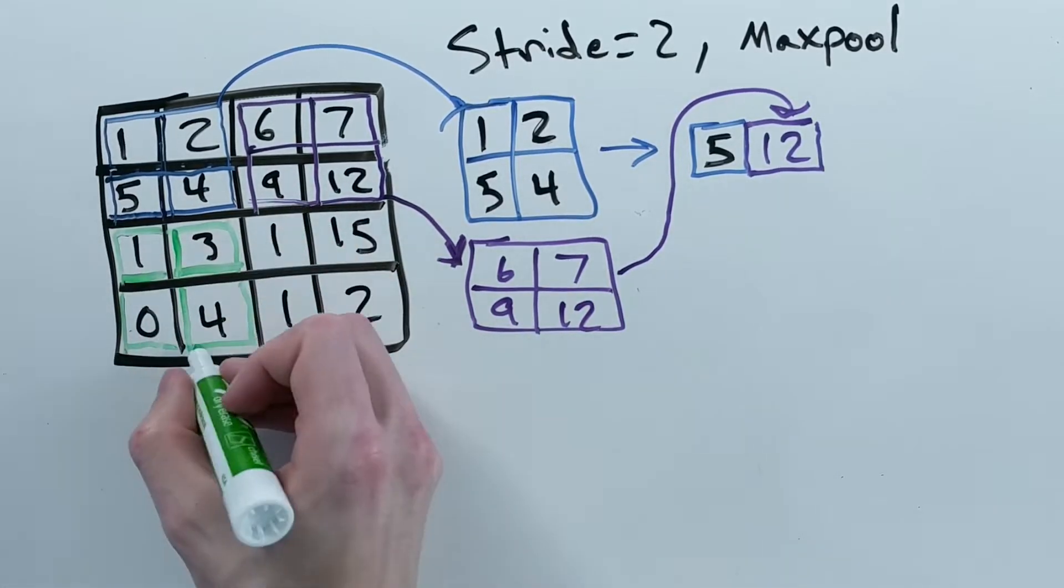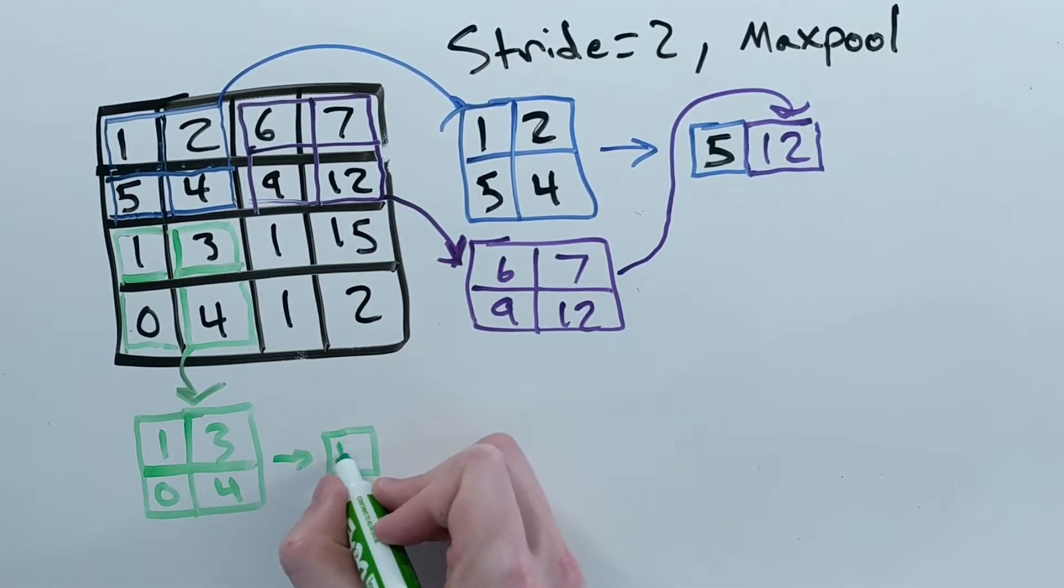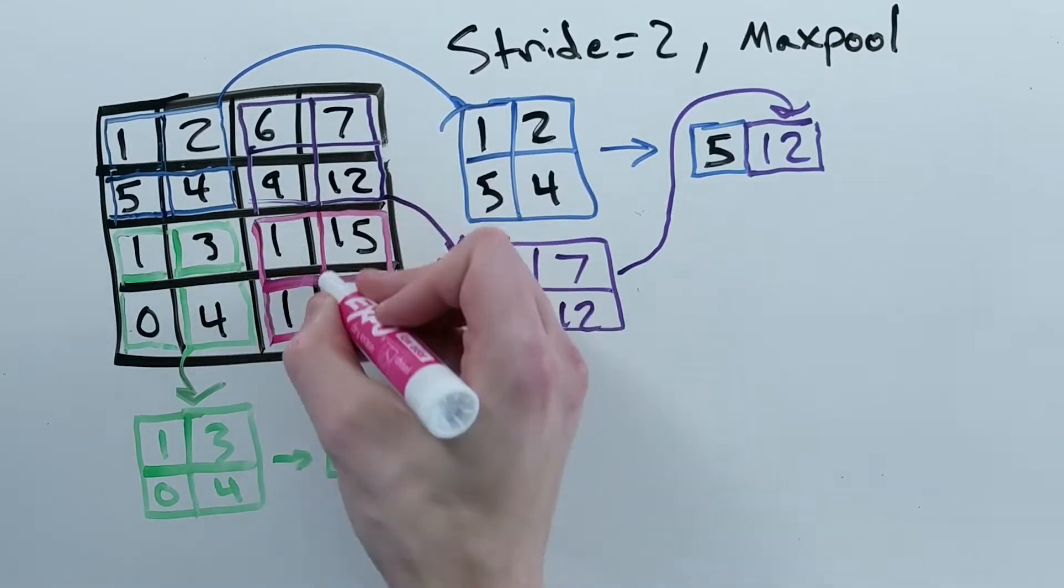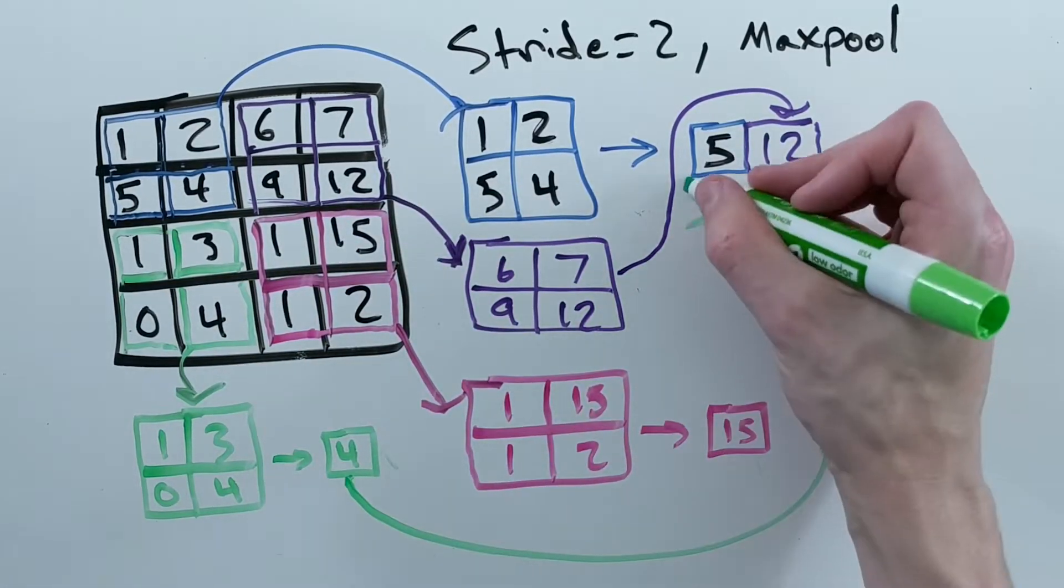Looking at the first block the highest number is 5, the next block the highest number is 12, and so on until you get the final output.